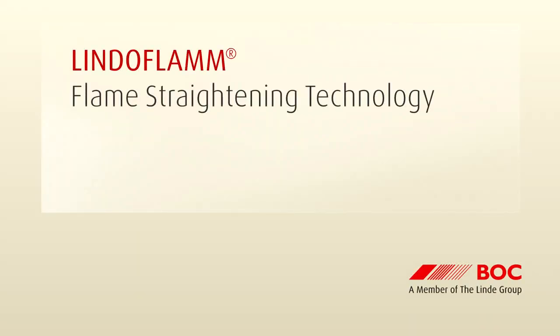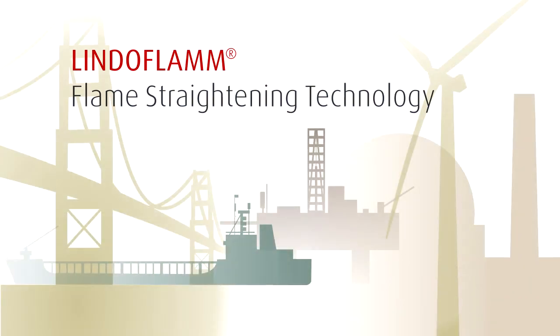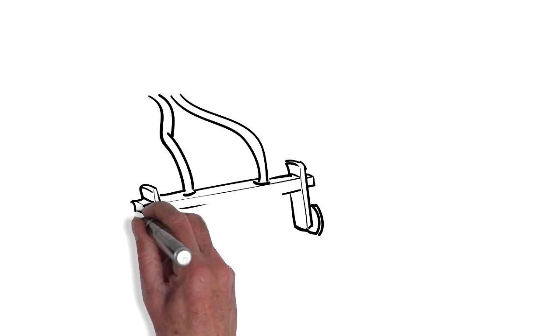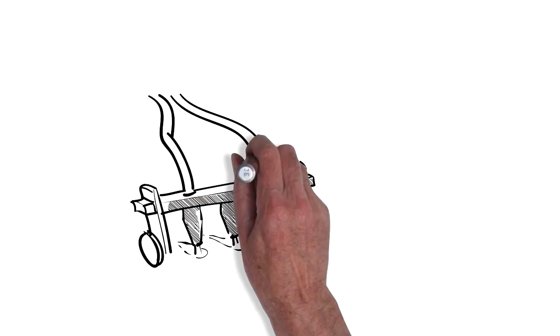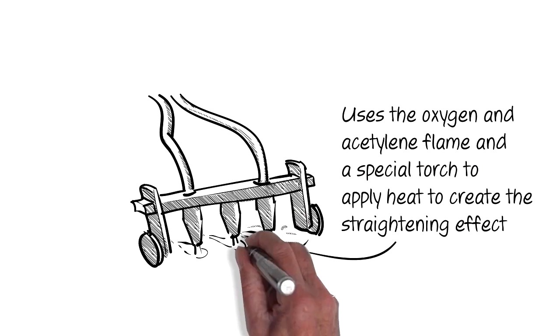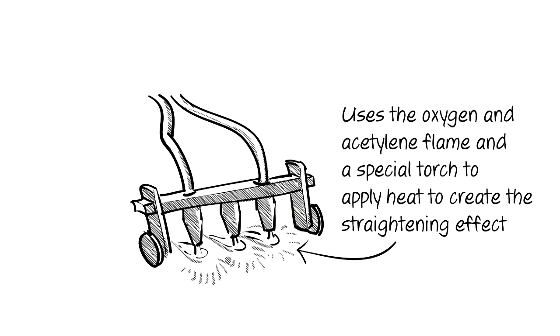LINDOFLAM Flame Straightening Technology. Flame straightening is a process that uses an oxyacetylene flame and a special torch to apply precise heat to the workpiece that creates a straightening effect to remove distortions.